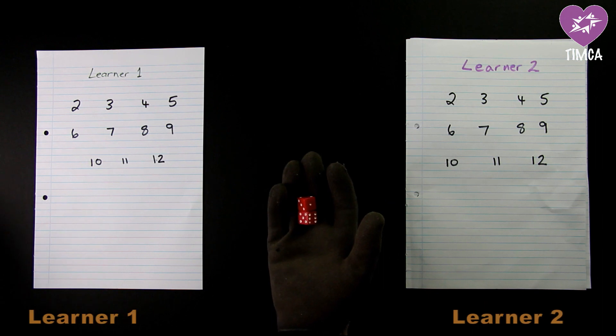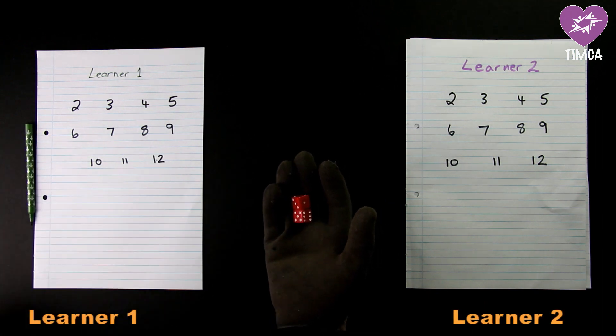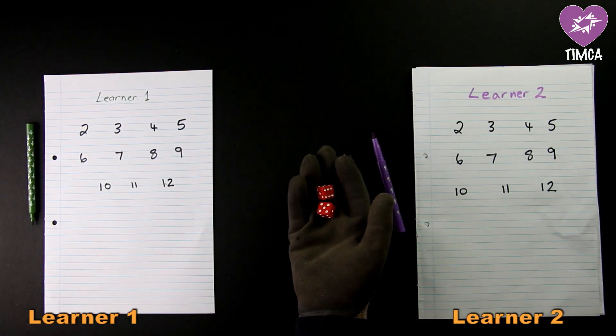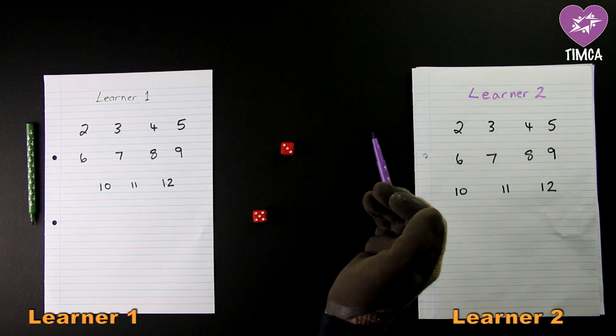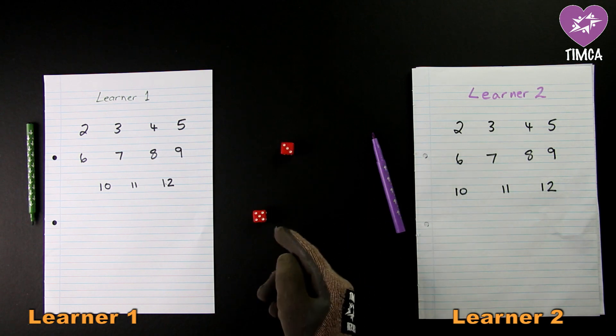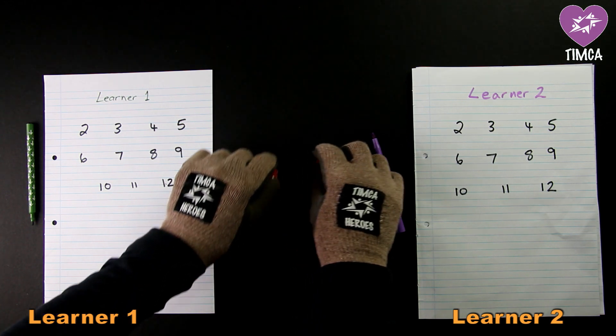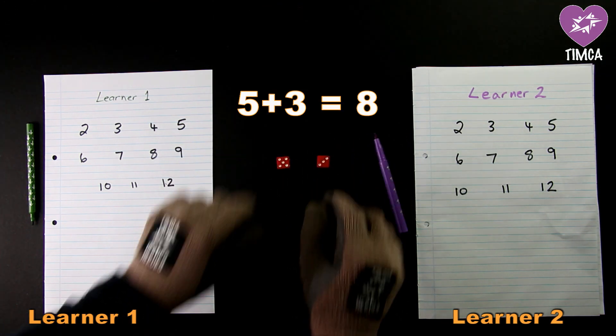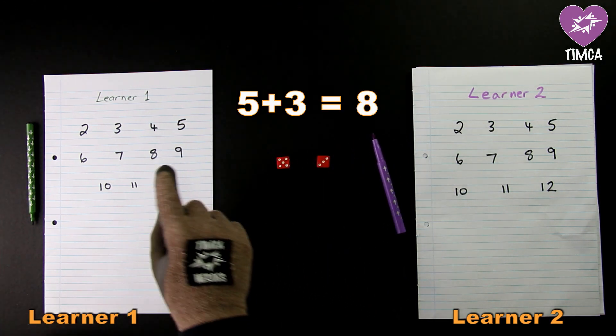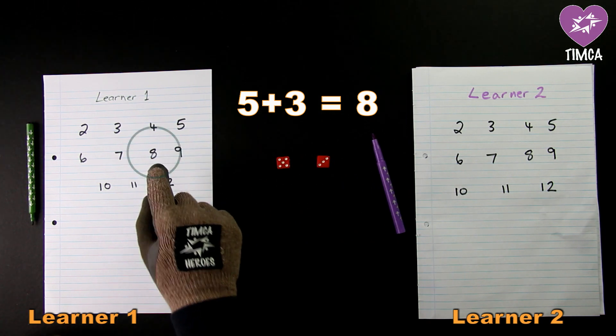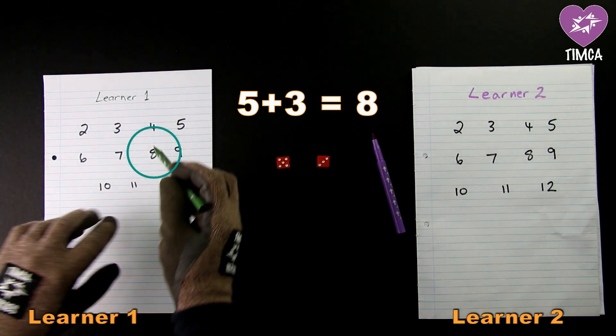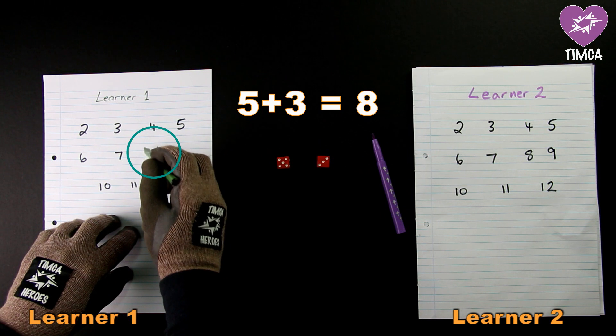Learner one is ready to start the game and will throw the dice. Learner one throws the dice and gets a five and a three. Five and three is equal to eight and so learner one will now take their pen and cross out the eight.